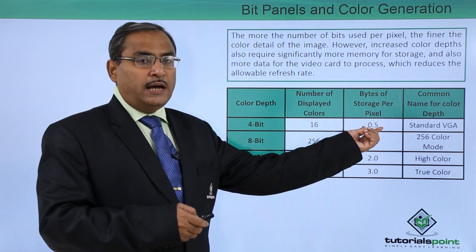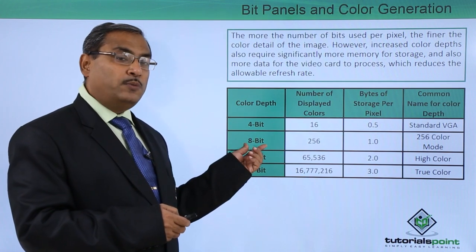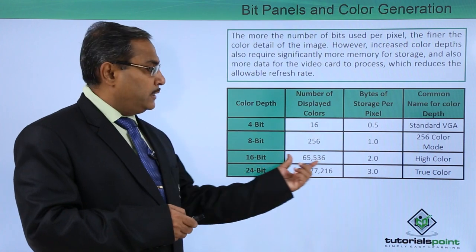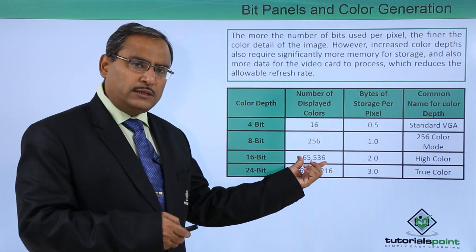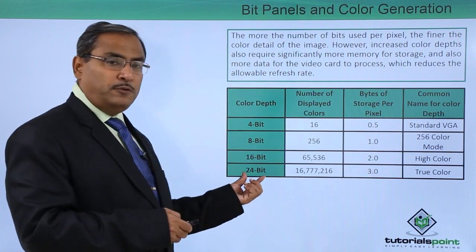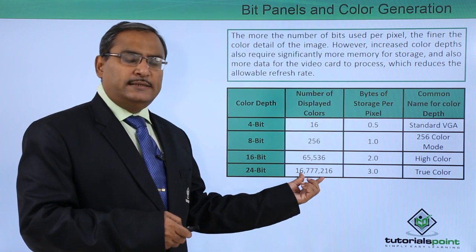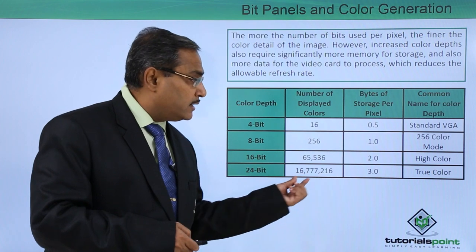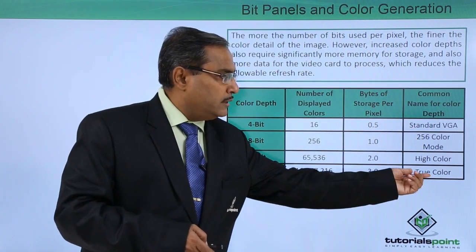4 bits — one nibble, half a byte — gives 16 colors and is standard for VGA. 8 bits gives 2 to the power of 8 = 256 colors, which is 1 byte — the 256-color mode. 16 bits gives 2 to the power of 16 = 65,536 colors, which is 2 bytes — this is high color. For 24 bits: 2 to the power of 24 = 2⁴ × 2¹⁰ × 2¹⁰ = 16 × 1024 × 1024 = 16 million colors, which is 3 bytes — and this is known as true color.